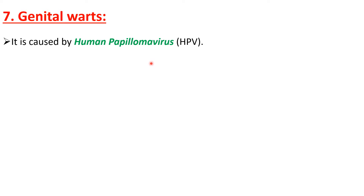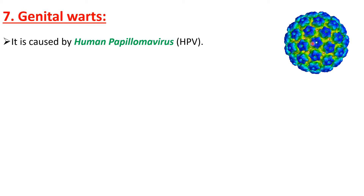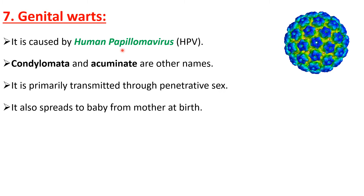The causative agent is Human Papilloma Virus (HPV). Human Papilloma Virus is responsible for the occurrence of genital warts infection in human beings. This is the structure of Human Papilloma Virus. This infection is also called by other names like condylomata acuminata — these names can be used alternatively.